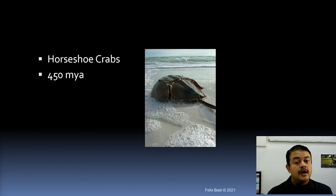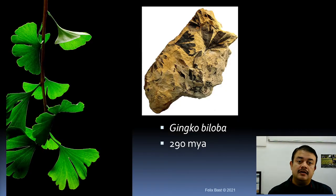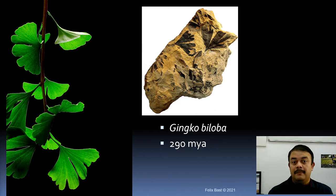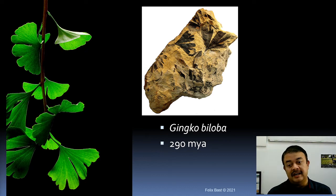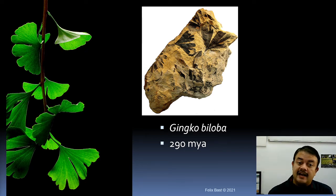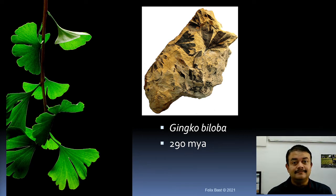Another example of a living fossil is the horseshoe crab, whose lineage dates back 450 million years — a very old lineage that is currently still living. As a plant example, Ginkgo biloba, used in Chinese traditional medicine for healing, is also a very old lineage dating back around 290 million years, having survived many extinction events.